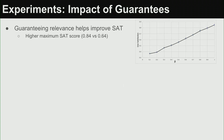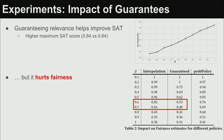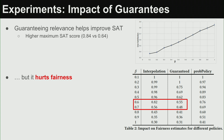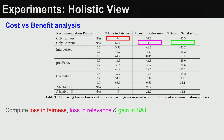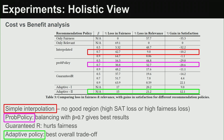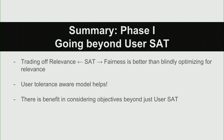Guaranteeing relevance improved satisfaction but hurt fairness — once you guarantee relevance, fairness doesn't gain as much. Adaptive policies are better than non-adaptive ones: the adaptive policy allows gains in fairness without severe losses in relevance, giving the best of both worlds. The summary is that trading off relevance and fairness for satisfaction is much better than blindly optimizing for relevance, which does a poor job of exposing the long tail of suppliers.